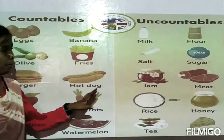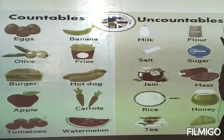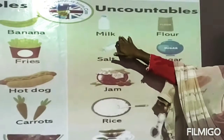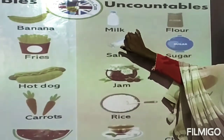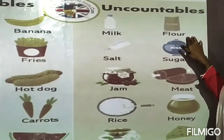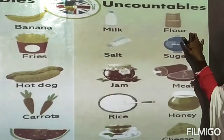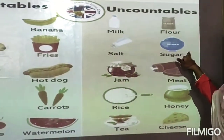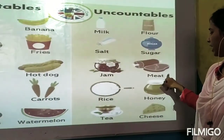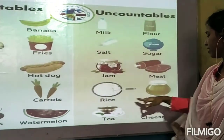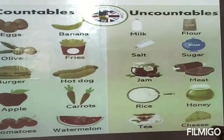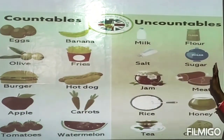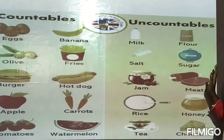Now, uncountable nouns are those which cannot be counted but we can tell their quantity. For example: flour, salt, sugar, jam, meat, rice, honey, tea, and cheese. We cannot count these individually, but we can describe their quantity. These are called uncountable nouns.